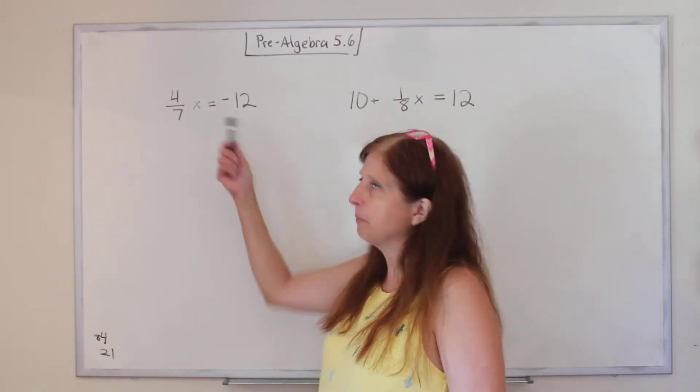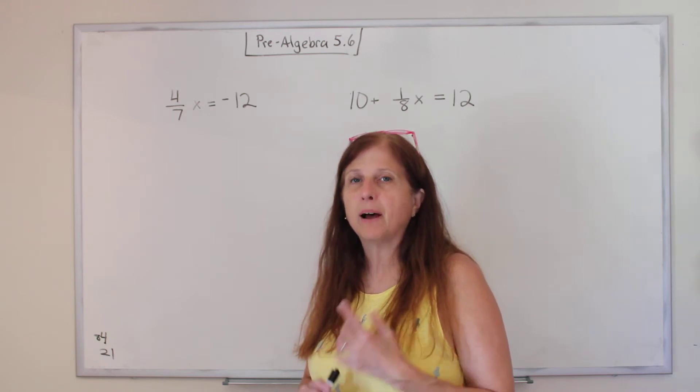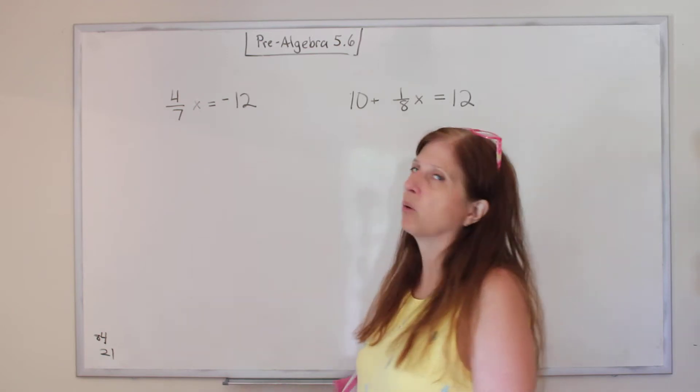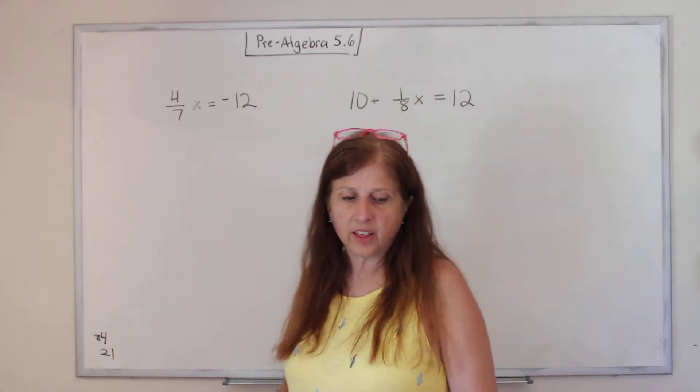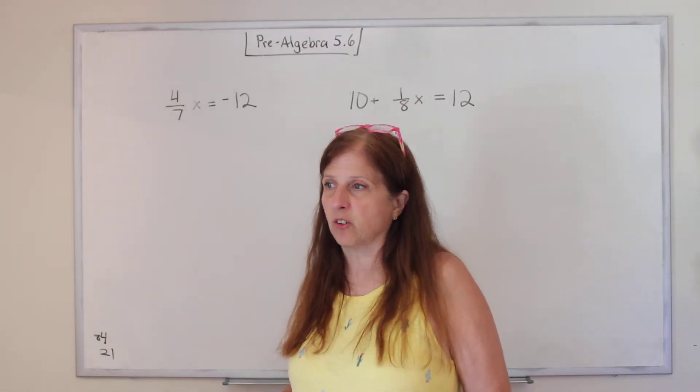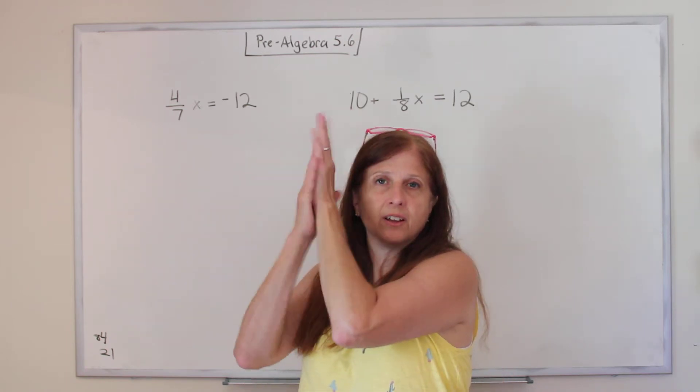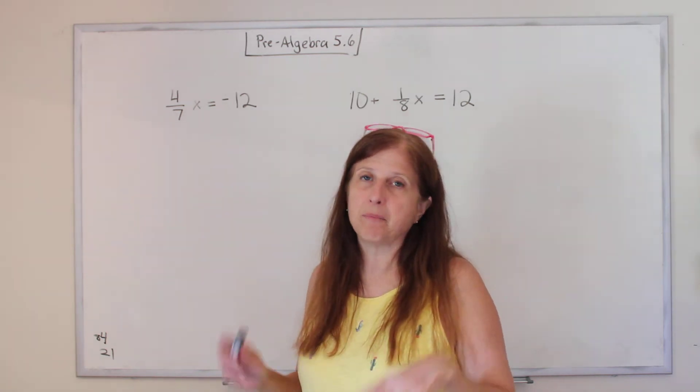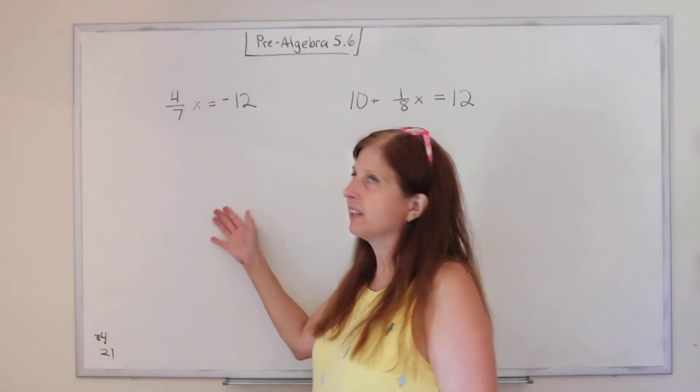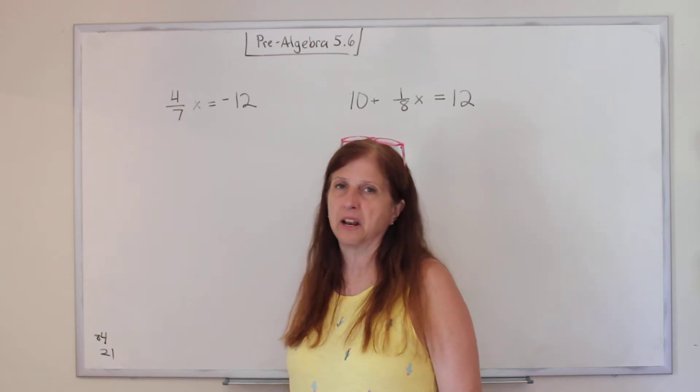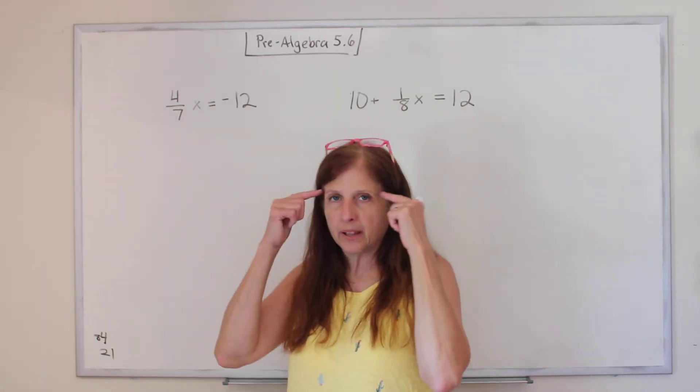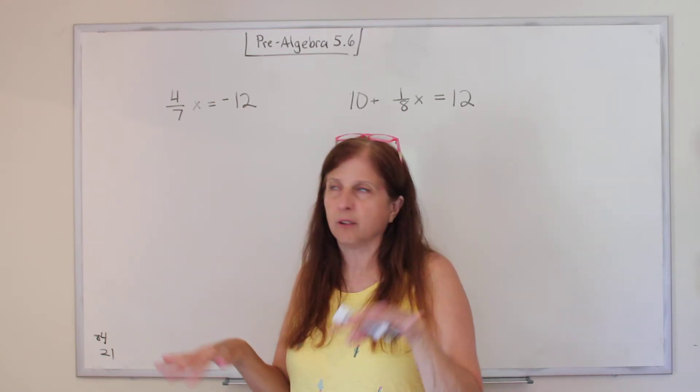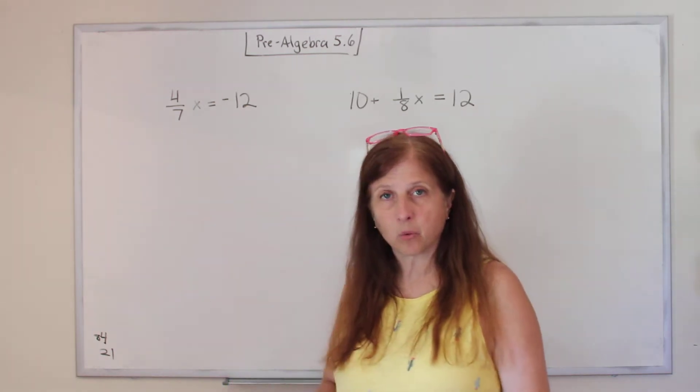So do you remember how we solve for x? By doing the opposite. So this x is being multiplied by 4/7ths. So the opposite would be to divide by 4/7ths. And to divide by a fraction is to flip it and multiply. But I have found with my decades of teaching math that kids just mess that up. It doesn't work. In their brains, they might say those words to me, but for them to do it on their paper, eh. So this is what I have found works instead.